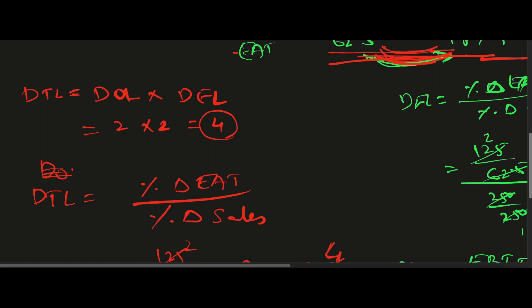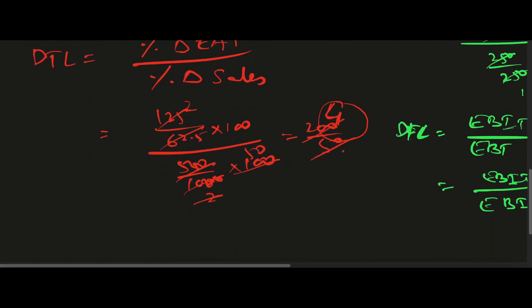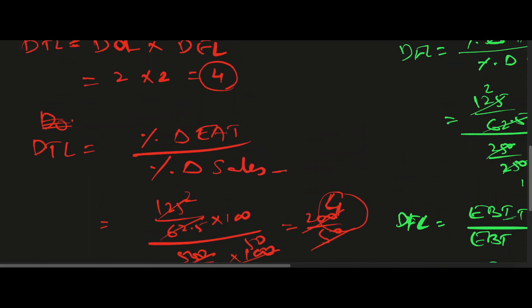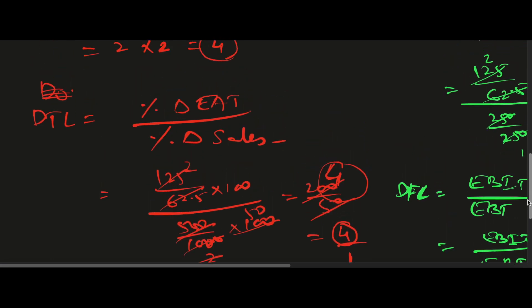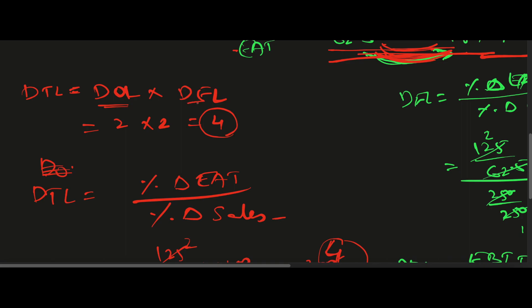So Degree of Total Leverage of 4 means: if my sales increase by 1 rupee, my Earning After Tax increases by 4 rupees. These are different ways to find out the total leverage.